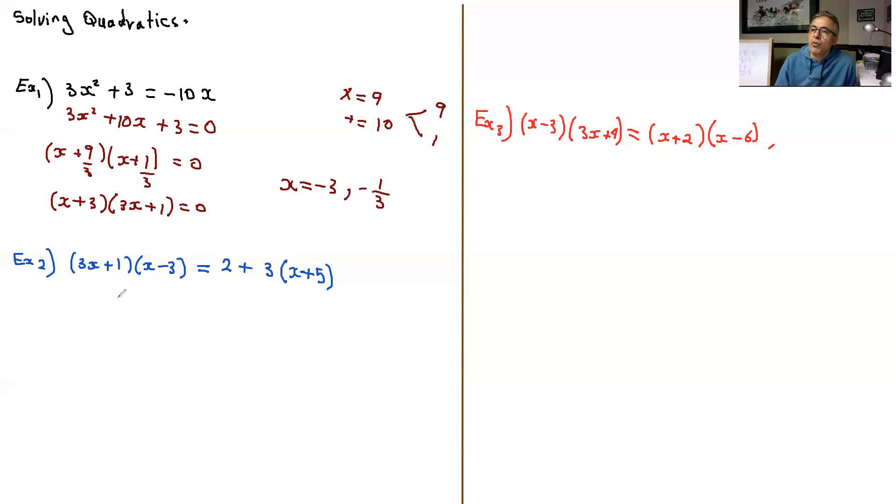The next question is a little bit more involved. So what you need to do, you need to foil this. And when you're foiling this, you foil so 3x times 3x, 3x squared minus 9x plus 1x minus 3 equals 2, distribute the 3 inside here, plus 3x plus 15.